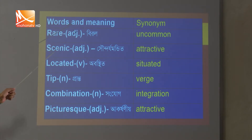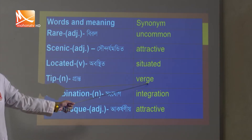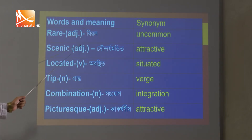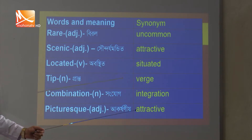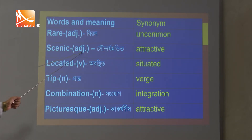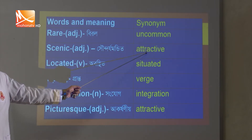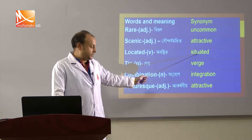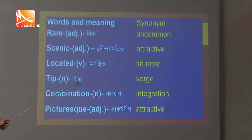Let me explain the words and meanings in Bangla. The synonyms are very essential to solve MCQ problems. The Bangla meanings of English words are essential to understand the passage. 'Rare' is an adjective — Bangla: birol; synonym: uncommon. 'Scenic' is an adjective — Bangla: sundor; synonym: attractive. 'Located' — Bangla: abasthito; synonym: situated. 'Tip' — Bangla: pranto; synonym: verse. 'Combination' — synonym: integration.